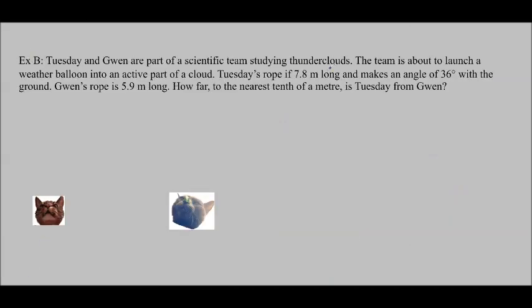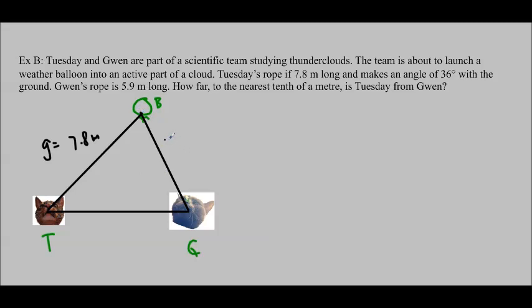Let's test out a word problem. Tuesday and Gwen are part of a scientific team studying thunderclouds. This is Tuesday and this is Gwen. The team is about to launch a weather balloon into an active part of a cloud. Tuesday's rope is 7.8 meters long. It makes an angle of 36 degrees with the ground, and this is the ground. Gwen's rope is 5.9 meters long. So how far to the nearest tenth of a meter is Tuesday from Gwen?